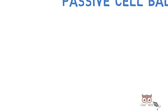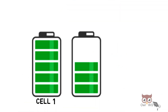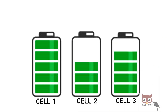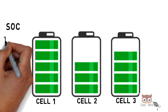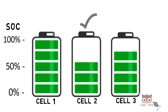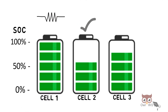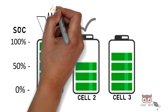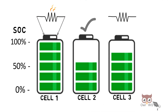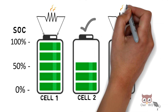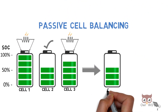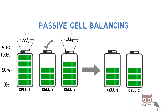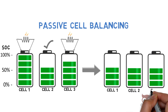Passive cell balancing: Consider three cells — cell 1, cell 2, and cell 3 — with different state of charge. The representative state of charge values are 0%, 50%, and 100%. Cell 2 consists of the least state of charge. So the other cells — cell 1 — is connected with a resistor and the excess energy is drained. Energy is lost in the form of heat. Similarly, cell 3 energy is drained. After passive cell balancing, cell 1, cell 2, and cell 3 will have the same state of charge as that of cell 2.